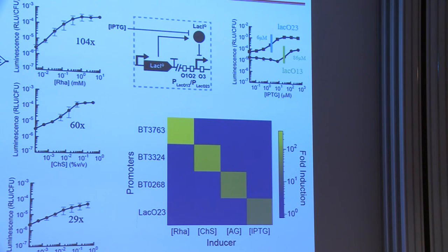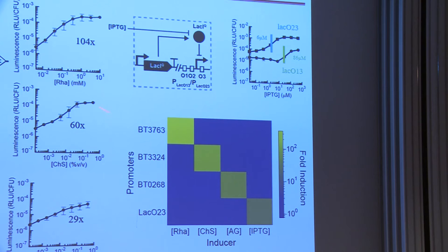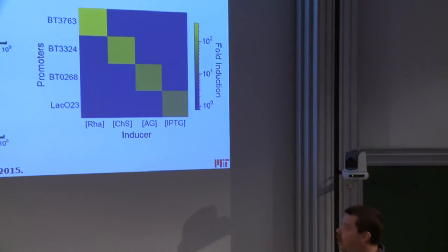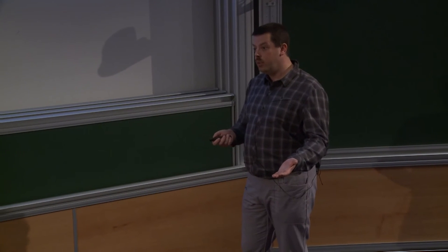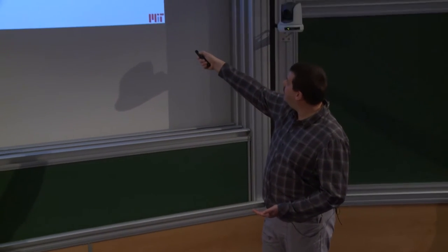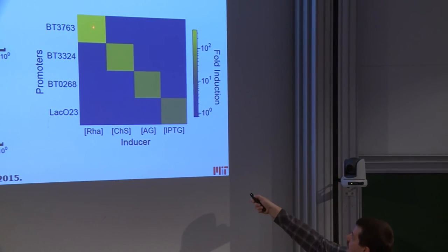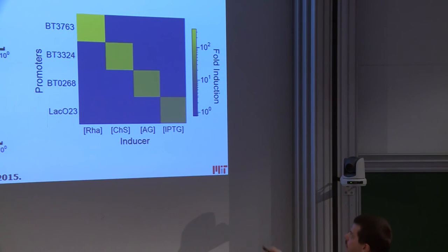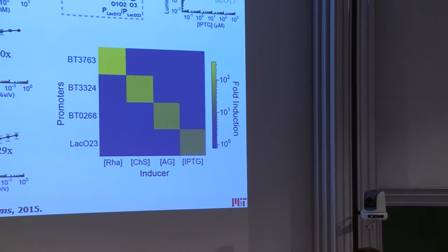Interestingly, they all worked, though with a limited dynamic range. By modifying the relative position of those lac operators, we could change the sensitivity of those promoters, giving us the possibility to induce at various levels of IPTG. Finally, we tested whether all of those promoters — which have different inducers, all sugars or derivatives of sugars — were orthogonal to each other. The graph shows induction only when the inducer of a given system is paired with its corresponding promoter, with absolutely no cross-induction. So they are perfectly orthogonal.